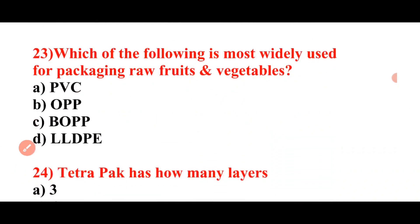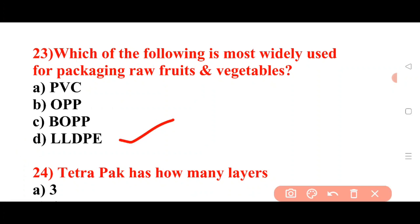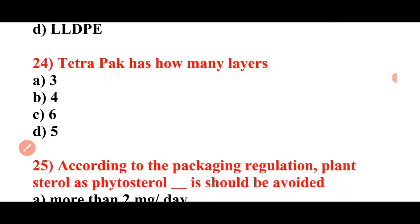Next question: Which of the following is most widely used for packaging raw fruits and vegetables? Options: PVC, OPP, BOPP, LLDPE. Answer: LLDPE is widely used for packaging of raw fruits and vegetables.